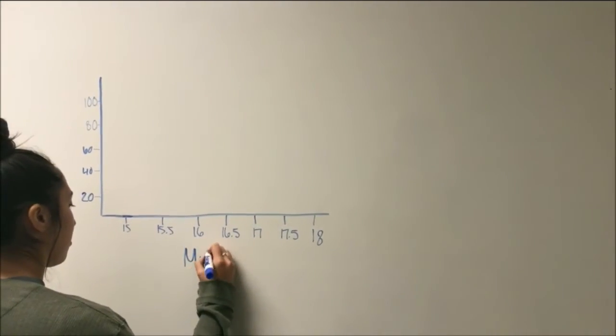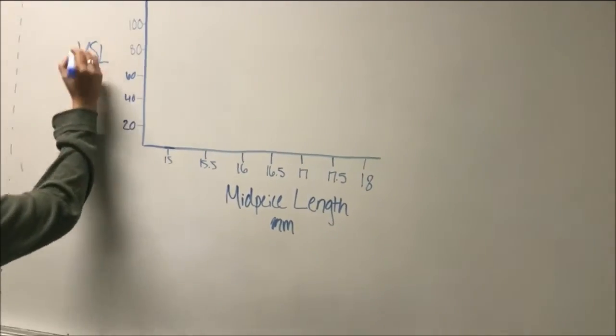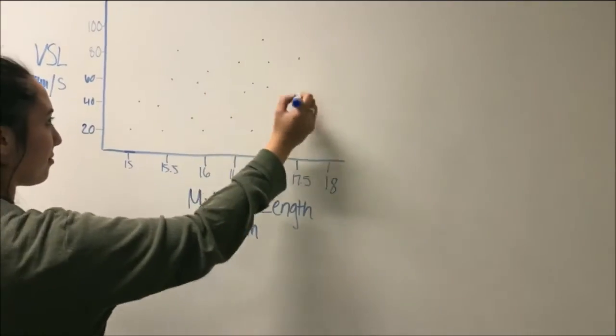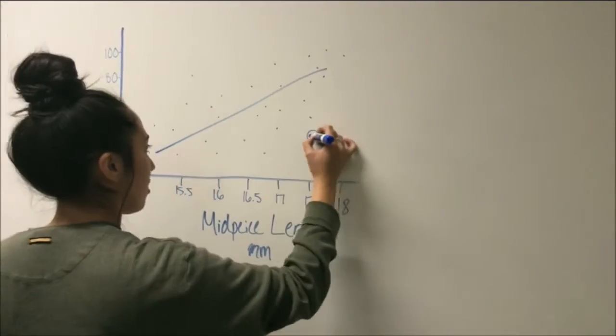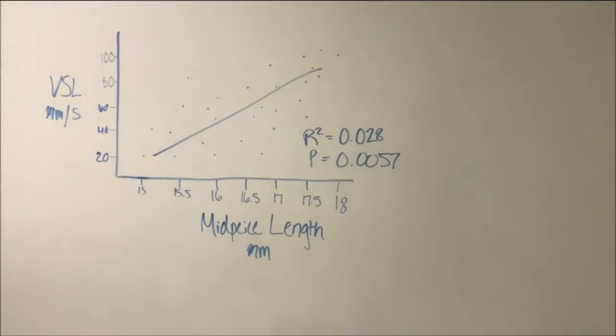From the video recordings taken, a computer program was utilized to analyze each frame of the recordings and calculate the mean straight line velocity or VSL value for the sperm. The length of each of these observed sperm midpiece lengths were recorded as well as the species of the mouse. All this data was plotted against VSL to reveal a positive correlation.